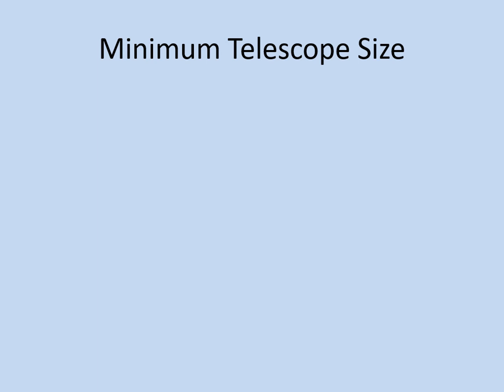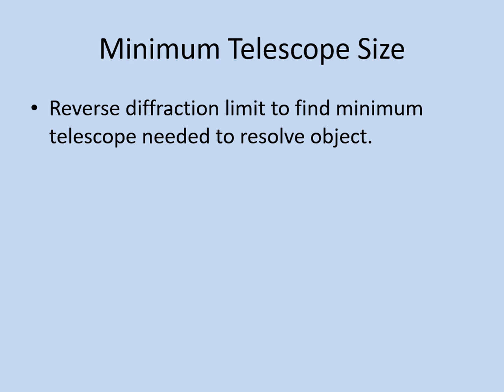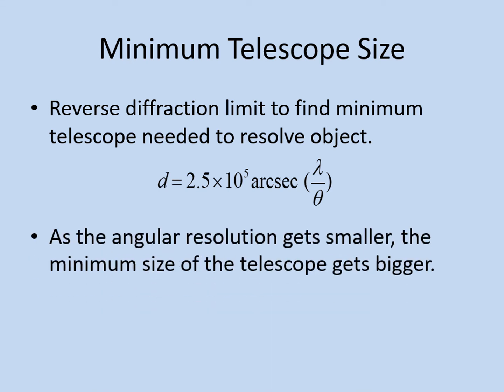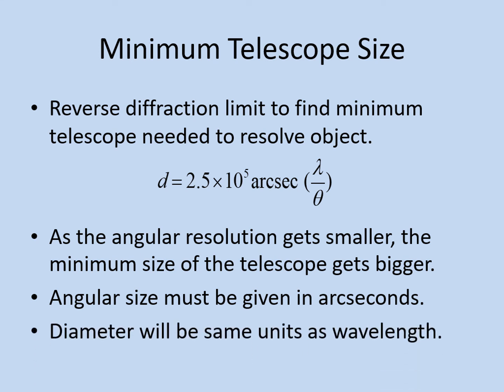Often we know the angular resolution we want, so we can use this same formula to determine the minimum size of the telescope we need. Rearranging the formula to solve for diameter gives: D equals 2.5 times 10 to the fifth arc seconds, times the wavelength divided by the angular resolution. Notice that as the angular resolution needed gets smaller, the telescope has to get bigger. In this formula, the angular size must be given in arc seconds, and the diameter comes out in the same units as the wavelength. If you have a wavelength in nanometers, convert the answer into meters for a more intuitive result.